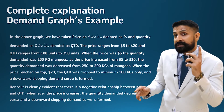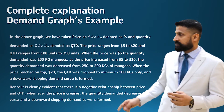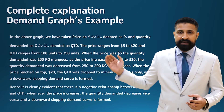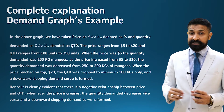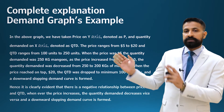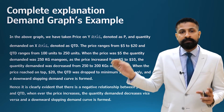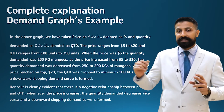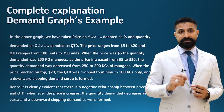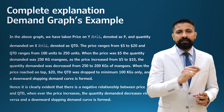Now I'll show you the complete explanation for the demand curve. Read along: 'In the above graph, we have taken price on y-axis denoted as P, and quantity demanded on x-axis denoted as QTD. The price ranges from 5 to 20 and quantity demanded ranges from 100 to 250 units. When the price was $5, the quantity demanded was 250 kg of mangoes. As the price increased from 5 to 10, the quantity demanded decreased from 250 to 200 kg of mangoes. When the price reached on top at $20, the quantity demanded dropped to a minimum of 100 kg only, and a downward sloping demand curve is formed.'